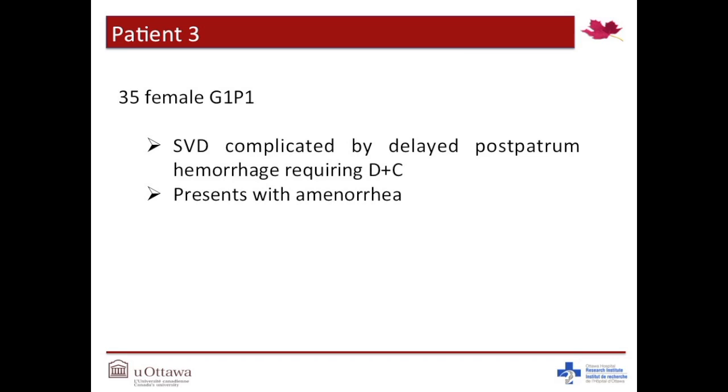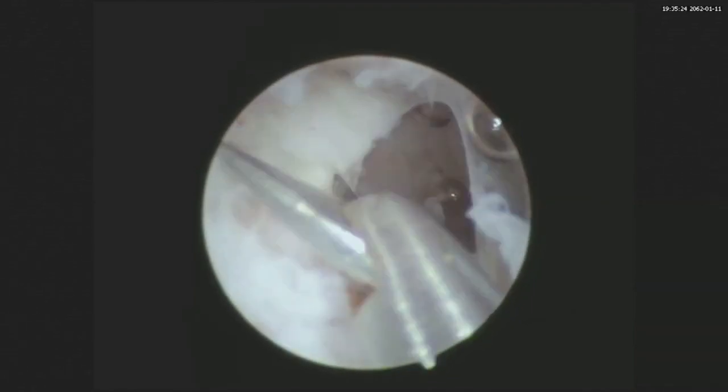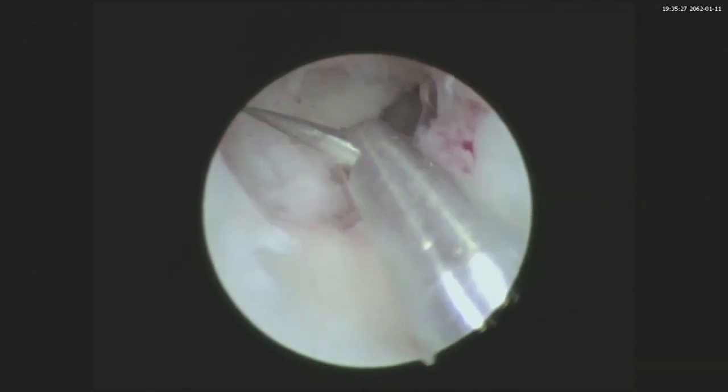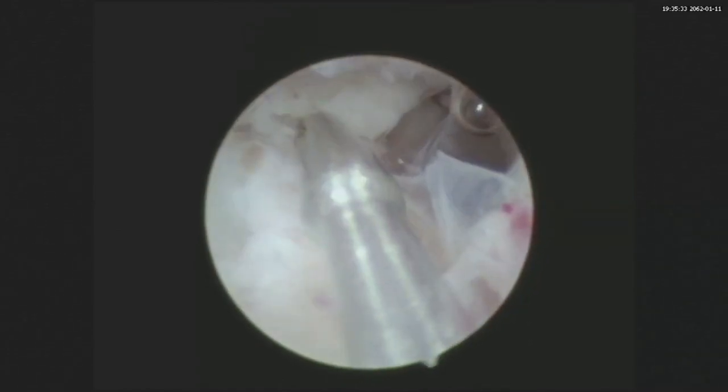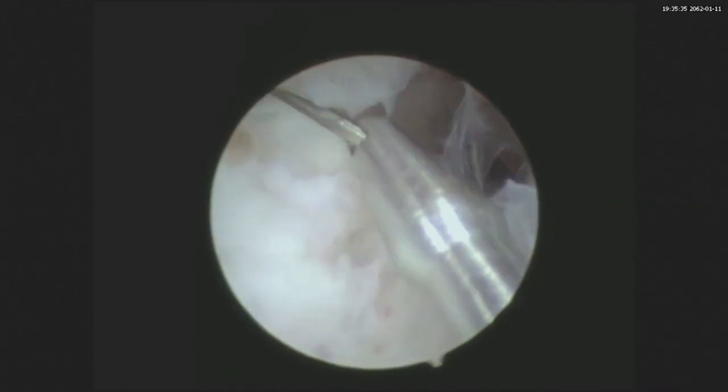Our final patient is a 35-year-old female, gravida 1 para 1, who had a spontaneous vaginal delivery complicated by a postpartum hemorrhage requiring an immediate dilatation and curettage. She presents with amenorrhea noted after cessation of breastfeeding. Hysteroscopy reveals significant adhesions in the cavity, obstructing the right cornua. Orientation is very difficult in this case, and we stress that you should frequently recheck your location within the uterus. Gentle cutting with the micro scissors is systematically performed under direct vision, and the hysteroscope is also used to spread apart filmy adhesions when possible.